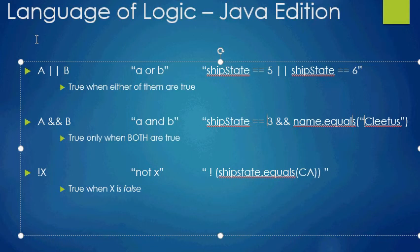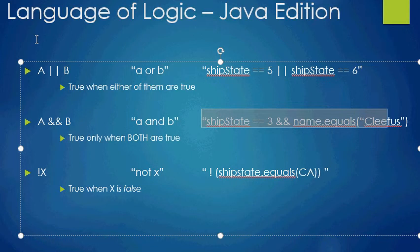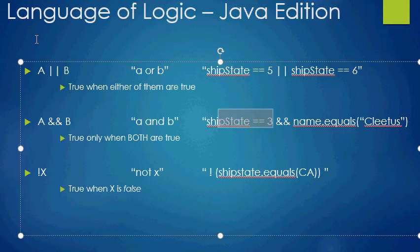Now let's look at AND. This is how you write AND in Java: A && B (A ampersand ampersand B). An example in Java that would use this is 'shipState == 3 && name.equals("Cletus").' Let's say our program is deciding whether to include an NRA postcard, and the state assigned to number three is Tennessee. So if shipState is three — meaning Tennessee — and the name is Cletus, we know that guy is likely interested, and we're going to send him an NRA postcard. That's why we use AND — so our whole expression only evaluates to true when both of them are true.